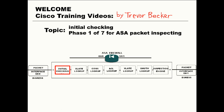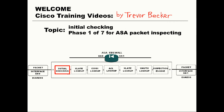Take a moment to look at the diagram that I drew below. Initial checking is the first phase in the Cisco ASA packet inspection process. Packets arriving at a firewall's interface are checked for basic integrity. One of the most important aspects this phase checks for is the integrity of a packet's source IP address.